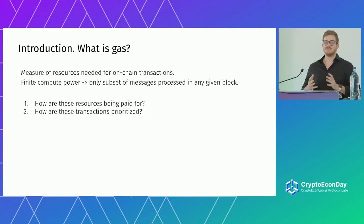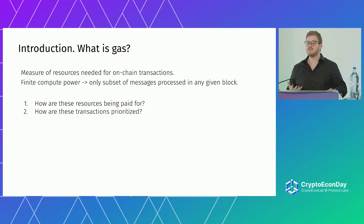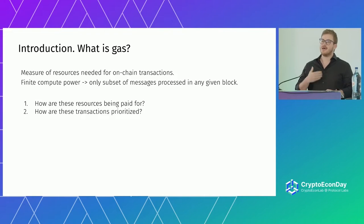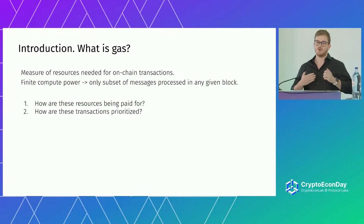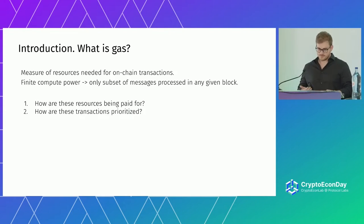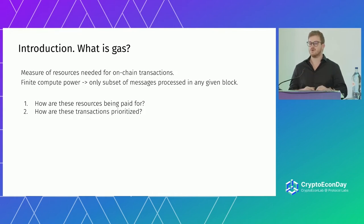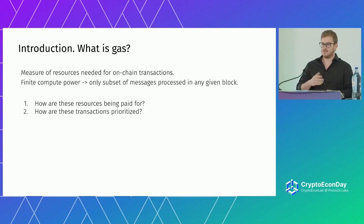So what is gas? Gas is a measure of the resources needed for on-chain transactions. Just in the same way that you have to put gas in your car to make it run, and the consumption of gas in your car will depend on how you drive it — whether you're going too fast, too slow, uphill, downhill — you also need to fuel your transactions in a blockchain, and the amount of gas your transaction will consume depends on the type of transaction you're using.